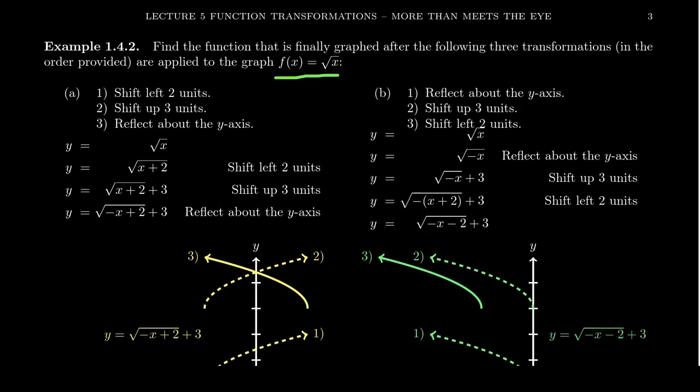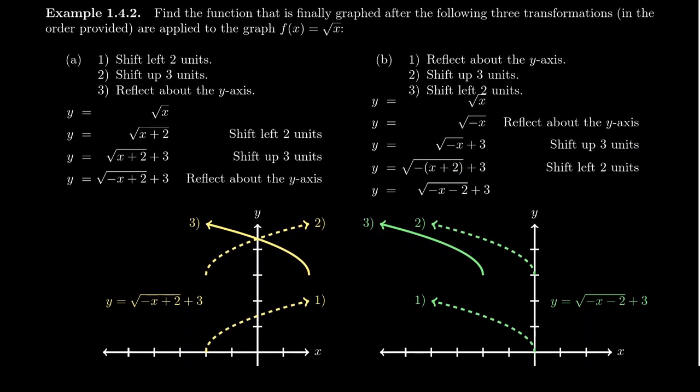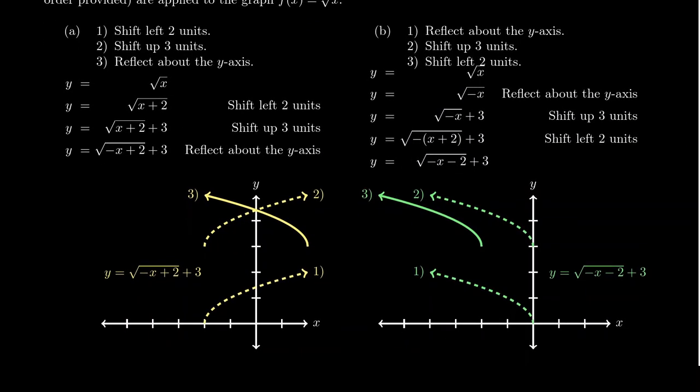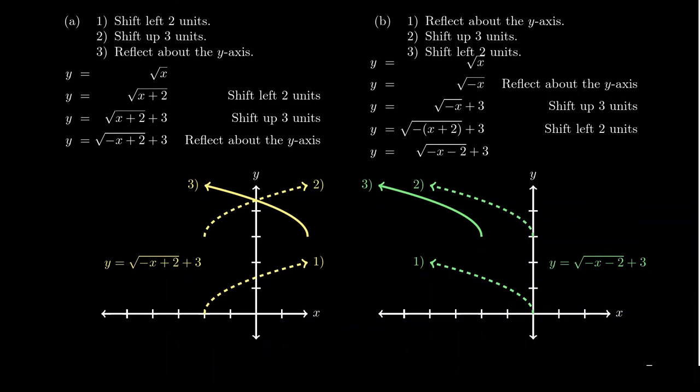Switching back to our slides over here, we want to graph the function f(x) equals the square root of x. But in this situation, we're going to do the same three transformations but in a different order. For the first graph, what we're going to do is we're going to first shift the graph left by 2. So you take the square root graph being shifted to the left by 2, you're going to get this graph here in yellow marked by step 1.